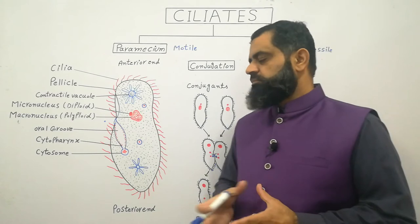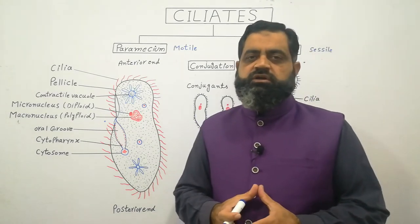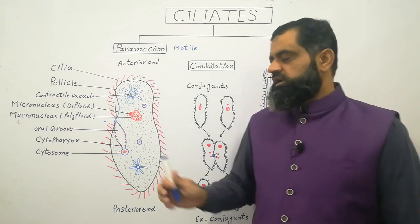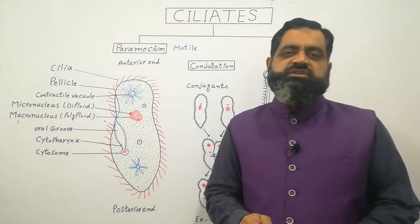So these are some important functions of the ciliates, paramecium. The digested material food is excreted from the body surface.